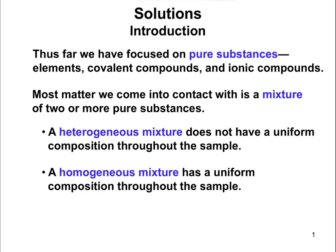A heterogeneous mixture does not have a uniform composition throughout. Think of something like asphalt or concrete — it doesn't look exactly the same everywhere. You can find one spot that might be lighter and another that might be darker. A homogeneous mixture has a uniform sample throughout — think of something like a soft drink, where no matter what sip you take, it's always going to taste and look the same.